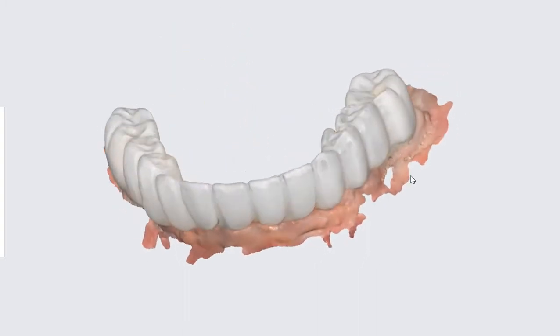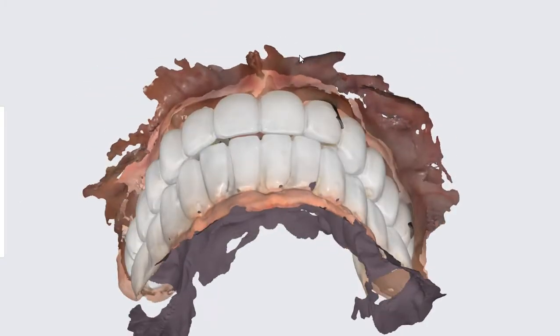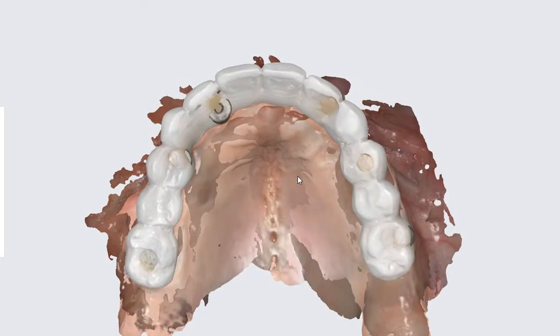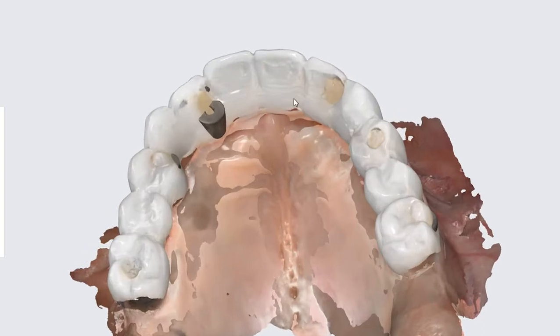I'll make all those adjustments on the provisionals themselves, and then scan the opposing arch and make any changes as needed. What we'll do is scan the whole arch and the palate. You can see I made some changes to the thickness of this area.